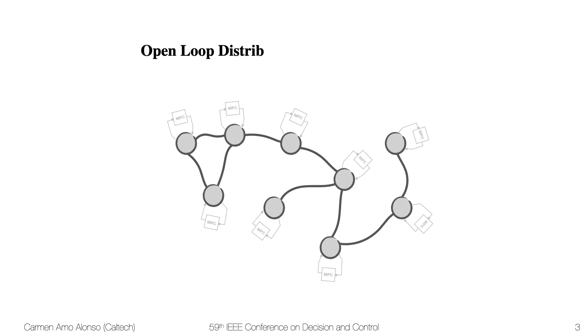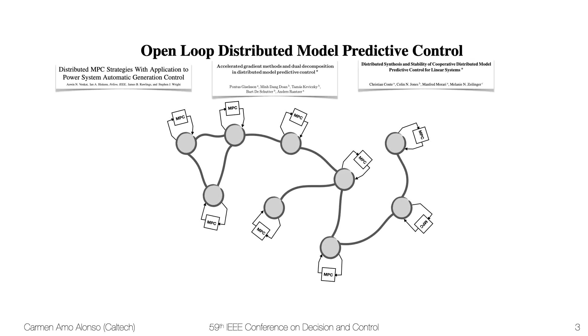What people have been doing instead is to use open loop distributed model predictive control approaches where each subsystem has its own subcontroller. We're going to focus today on the case where there is coordination across subsystems.